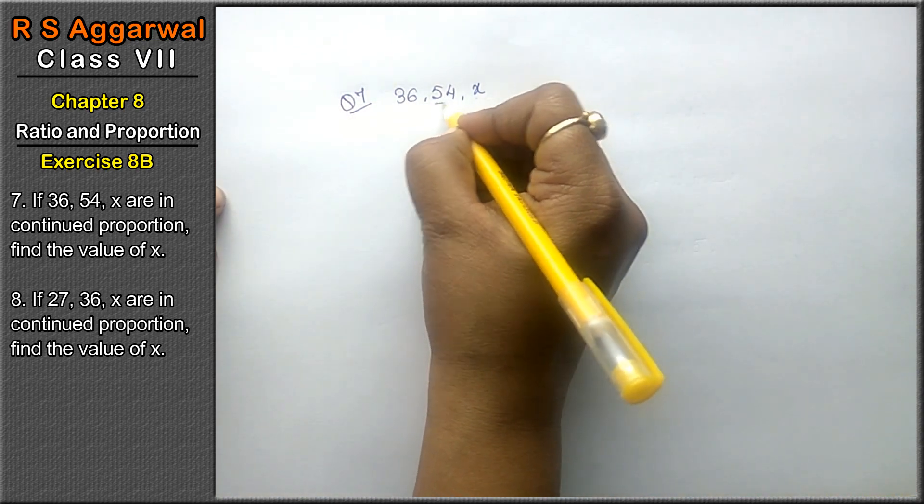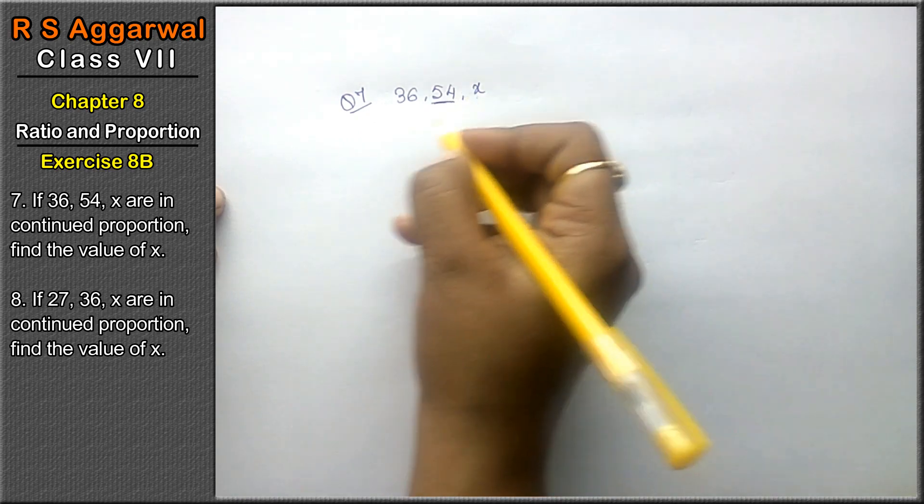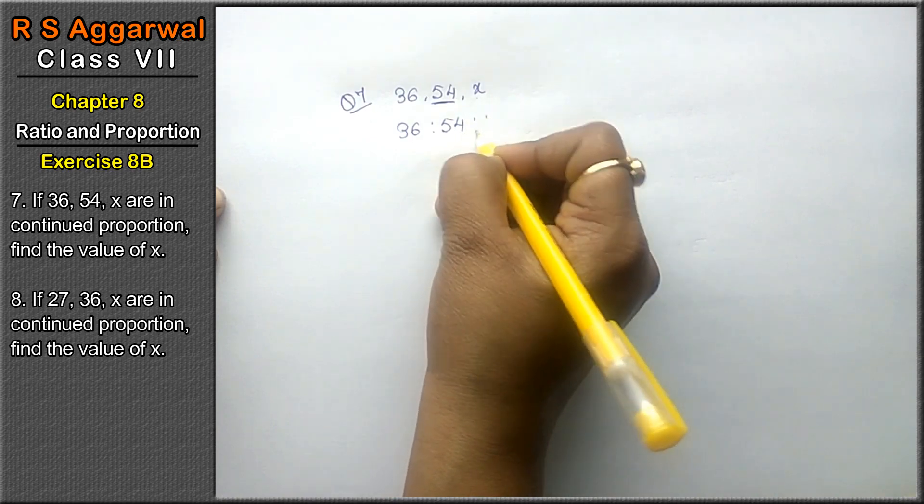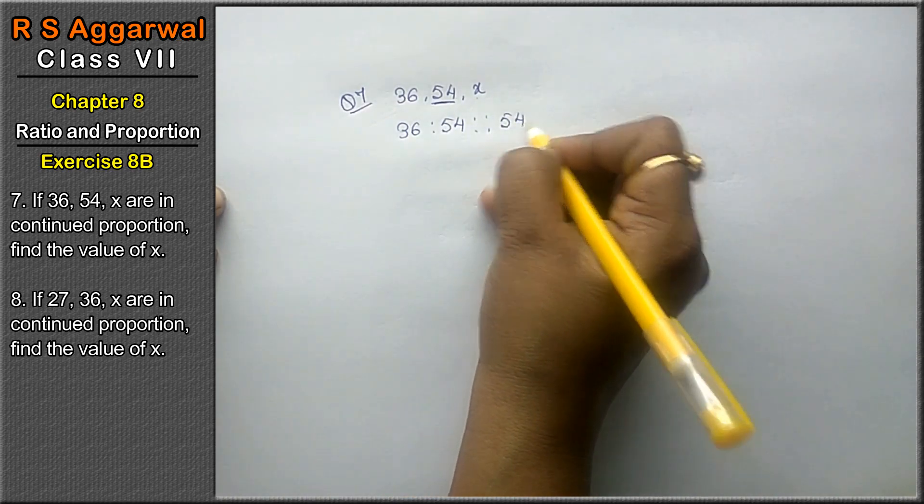In continued proportion, the middle value appears 2 times. So 36 is to 54 is to 54 is to x.